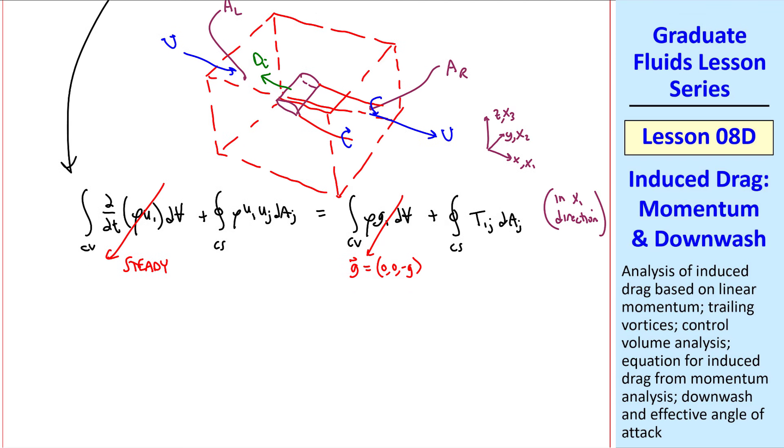Let's examine the two remaining terms. If we take a small element of area, dal, on the left face, its components are negative 1, 0, 0, da. And similarly, on the right side, its components are 1, 0, 0, da. Since index j is repeated, we sum. We have u1, u1, dal1 on the left face, plus u1, u2, dal2, plus u1, u3, dal3. But you can see that dal2 and 3 are 0. The only component is in the X1 direction. So those two terms go away.